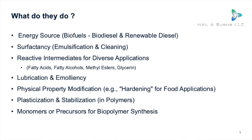As an energy source, biodiesel is produced by transesterifying a fat or an oil with an alcohol — usually methanol — to form a fatty acid methyl ester, or FAME. That's traditional biodiesel. Renewable diesel, otherwise known as hydrotreated vegetable oil or HVO, is produced by hydrotreating fats and oils. Both biodiesel and renewable diesel act as direct replacements or blends for petroleum-based diesel — a pretty big and growing market.